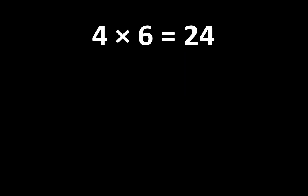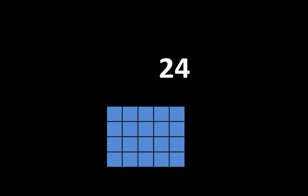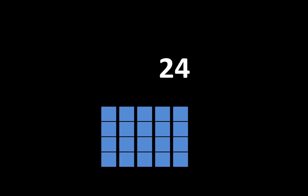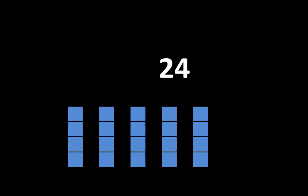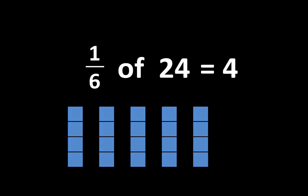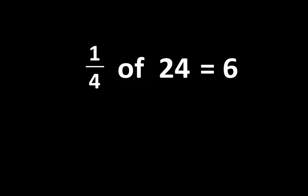4 times 6 is equal to 24, and there are many important ideas related to the number 24. If we divide 24 into 6 equal parts, each part would be 1/6 of 24, and 1/6 of 24 is equal to 4. At the same time, if we divide 24 into 4 equal parts, each part would be 1/4 of 24, and 1/4 of 24 is equal to 6.